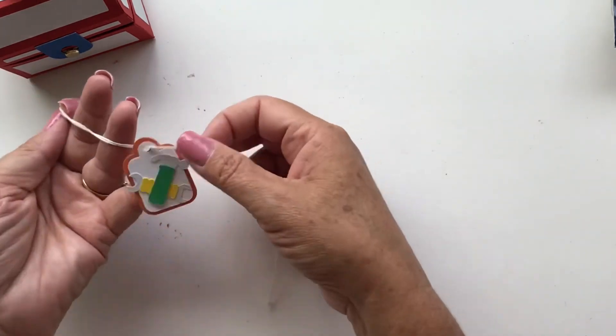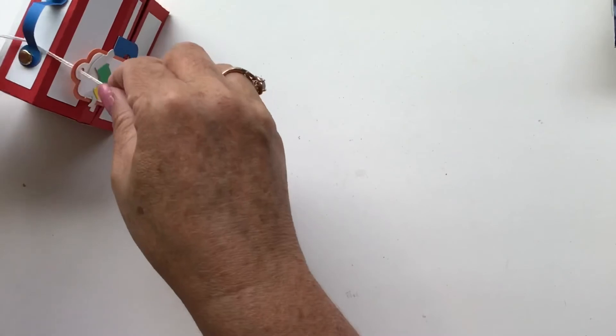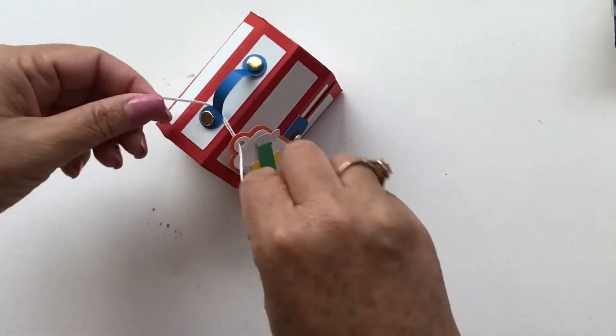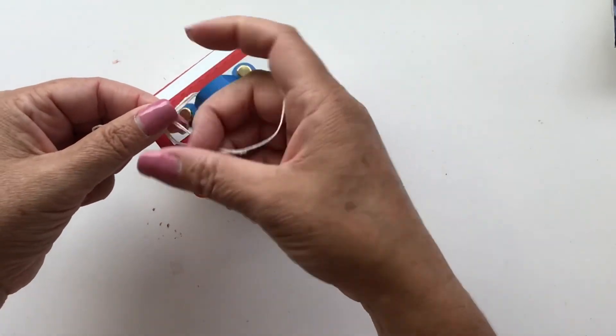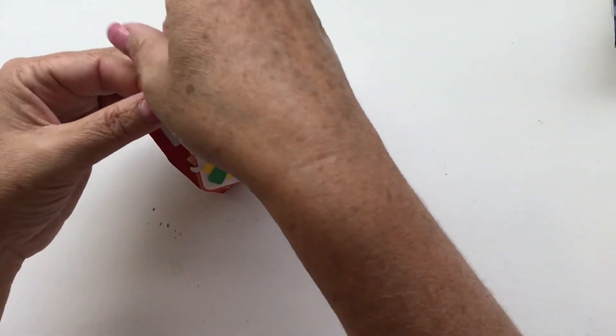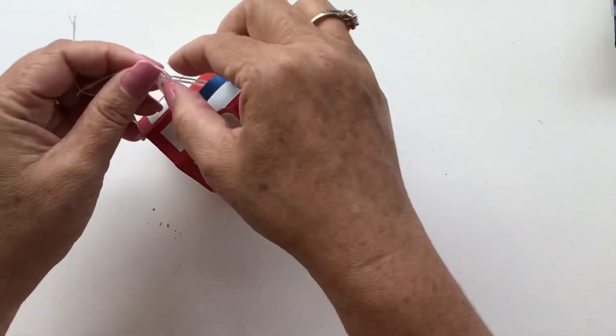And you could even put like a little sentiment to Dad or whatever. And I'm just going to tie it right on there, I don't know if you can see that. Just a square knot.